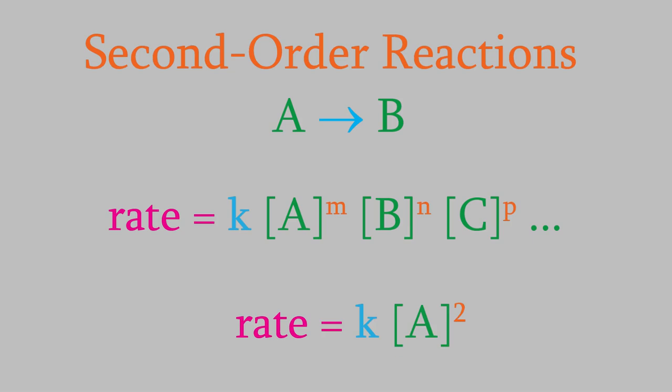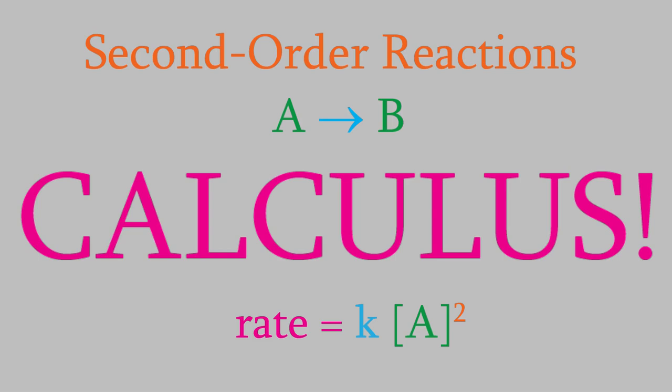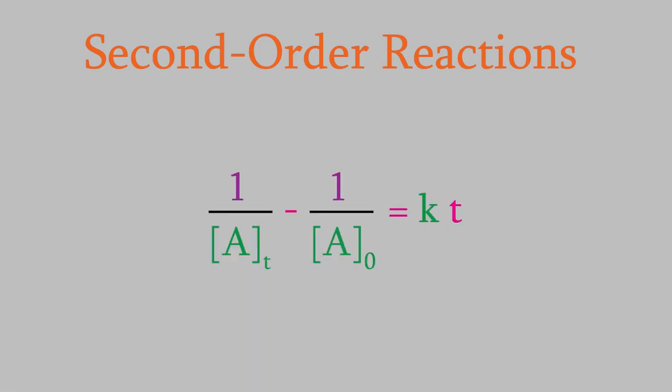Just as we did when we looked at first-order reactions, we want to get an equation that connects the length of time the reaction has been going to the concentration of the reactant that still remains. To do that, we need to use a little calculus. However, just like last time, many people taking general chemistry probably haven't had calculus yet, so I'll skip the math and just give you the result. You'll learn about the math behind it if you take a course in physical chemistry. Anyway, if we do the bit of calculus, we get this equation. This time, our equation doesn't have a logarithm in it, but all the other symbols still mean the same things — the final and initial reactant concentrations, the rate constant, and the amount of time.